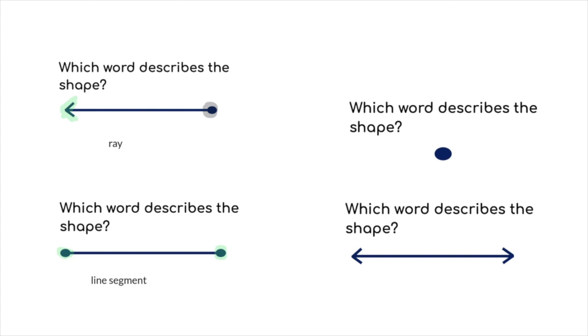And the last one. This has a straight line that goes on and on in both directions. So that would be called a line.